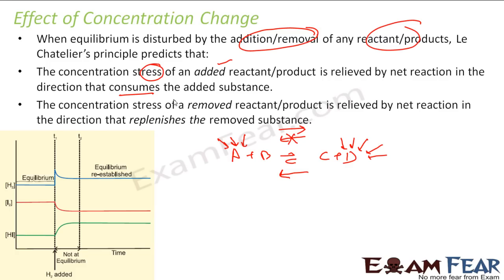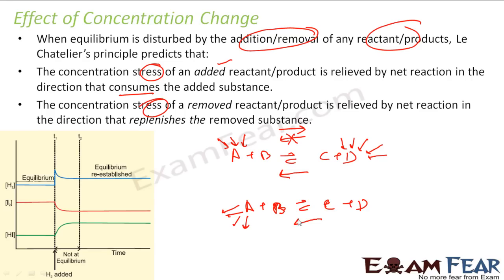Similarly, for removal: if I have A + B gives C + D and I remove A from here, a stress is created. It will be released by a net reaction in the direction that replenishes the removed substance — so the reaction moves in the reverse direction to bring back more A. Similarly, if I remove D, the reaction will move in the forward direction so that more D is produced.